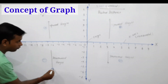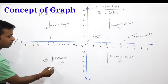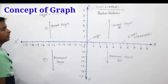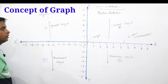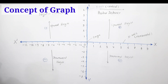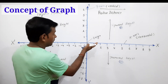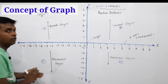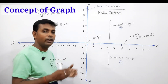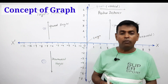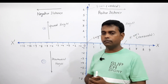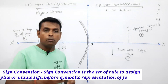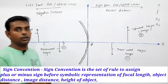To summarize the graph concept: downward distance from the x-axis is negative distance, and upward distance from the x-axis is positive distance. If you understand when values are positive and when they are negative in a graph, it will become very easy to understand the concept of sign convention.